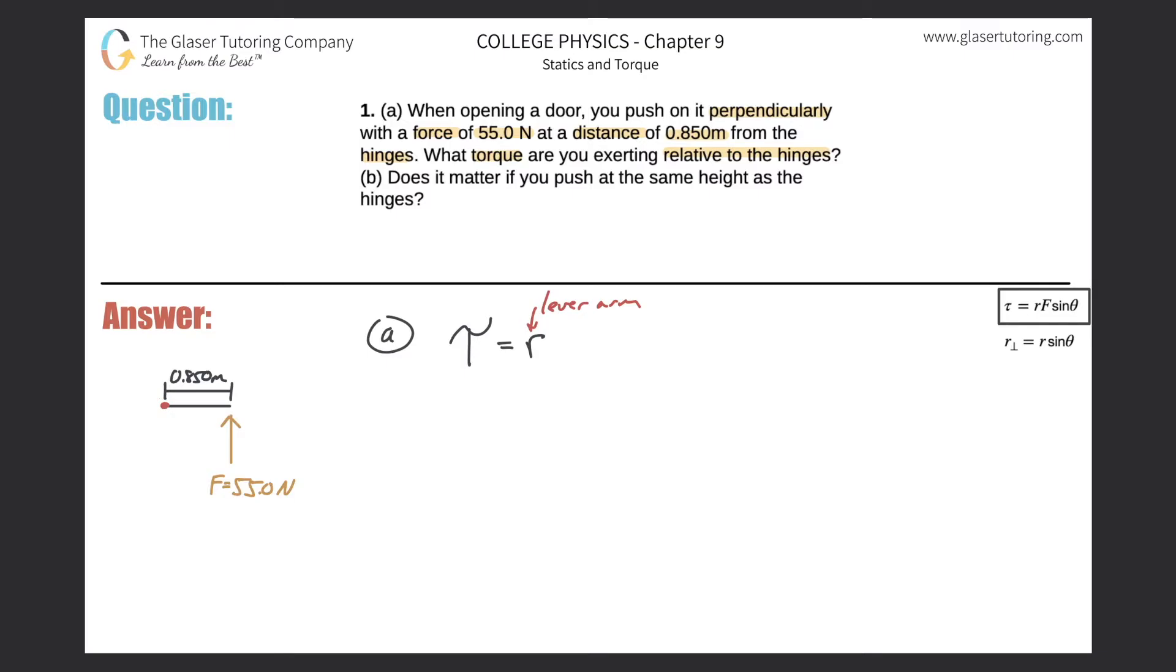F is going to obviously be the force applied, and then sine of the angle. The angle here is the angle between the lever arm and the applied force. For example, in the picture over here, the angle between the lever arm in black there, and the force here in yellow is going to be a 90 degree angle. So that takes care of what theta means.